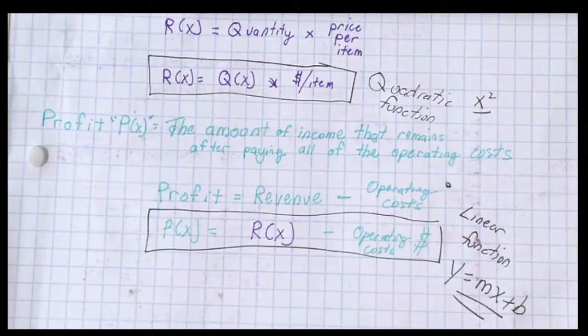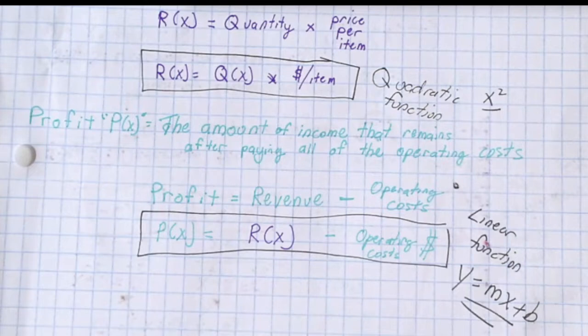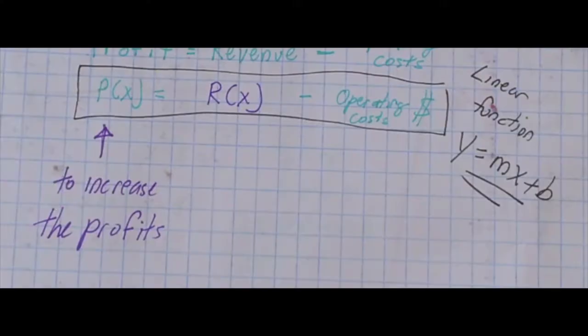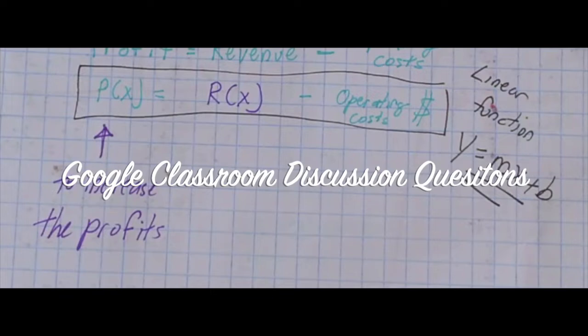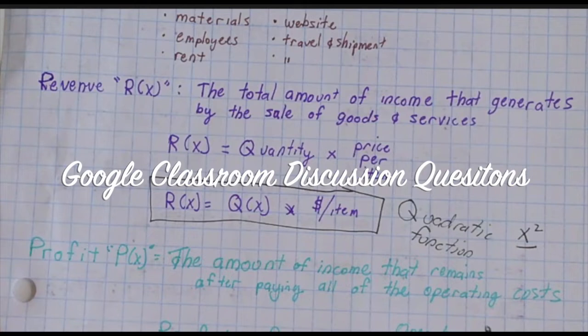It is important to know that the revenue function is a quadratic function, so watch out for that x squared term. And for our profit function, we're going to be dealing with a linear function in the form of slope-intercept form y equals mx plus b. Now looking at our equation for profit, how can we utilize the revenue and or operating costs to increase our profits? Lastly, what is the difference between revenue and profit? You'll be seeing these questions in our discussion board on Google Classroom. Now a quick commercial from one of our unofficial sponsors.